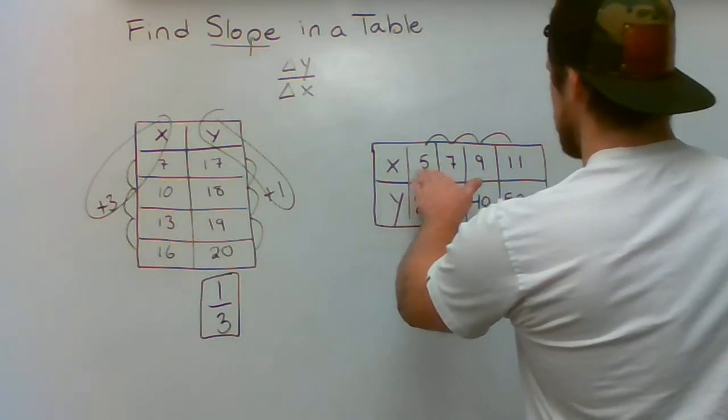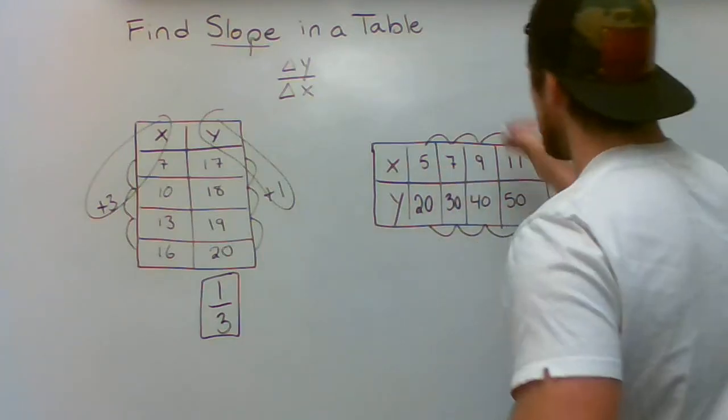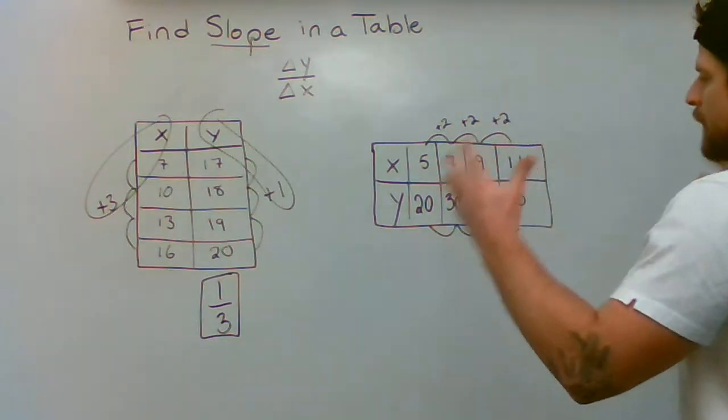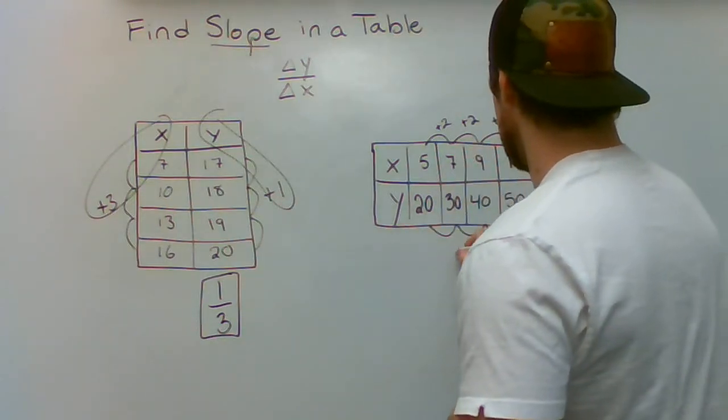So here we have change in X: 5, 7, 9, 11. We are adding 2, adding 2, adding 2. It's a common pattern. Here I'm adding 10 throughout.